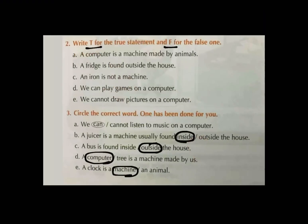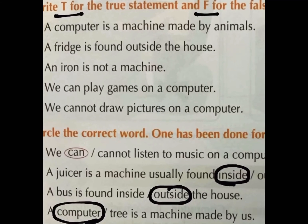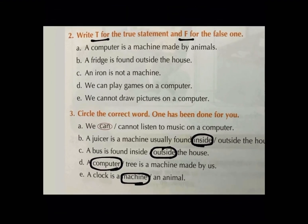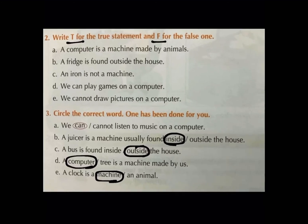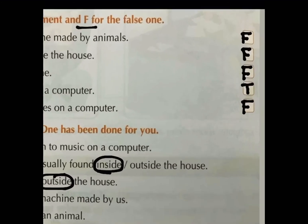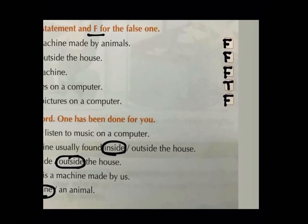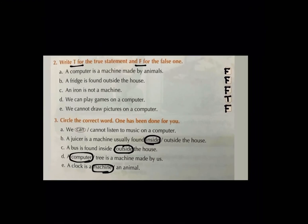In this exercise, we will write T for true statements and F for false statements. So, let us read the first statement: A computer is a machine made by animals. Kia computer animals nahi banaya hai? No. So, its answer is false. Write down F in the first box.